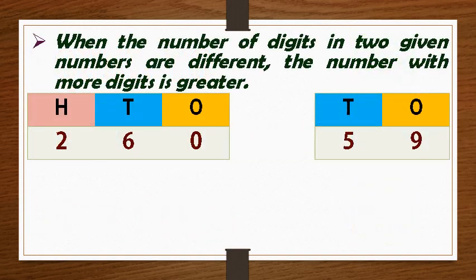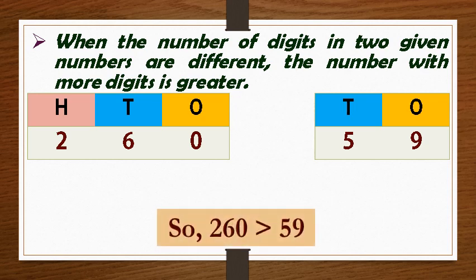When the number of digits in two given numbers are different, the number with more digits is greater. For example, 260 is greater than 59 because 59 has two digits and 260 has three digits.